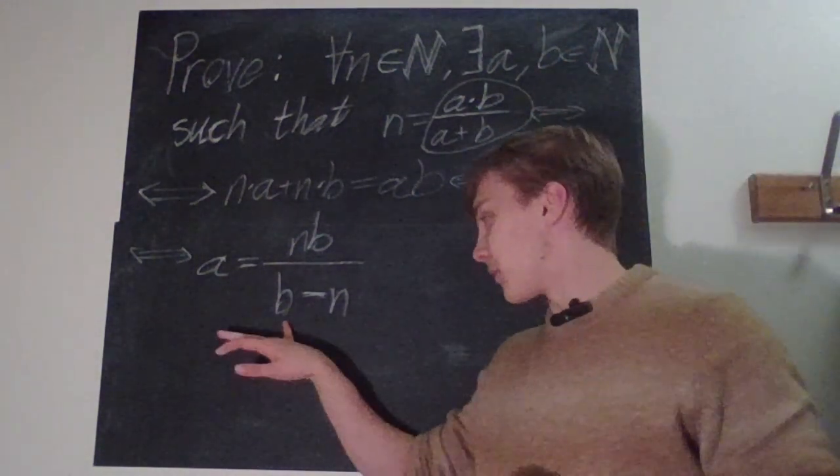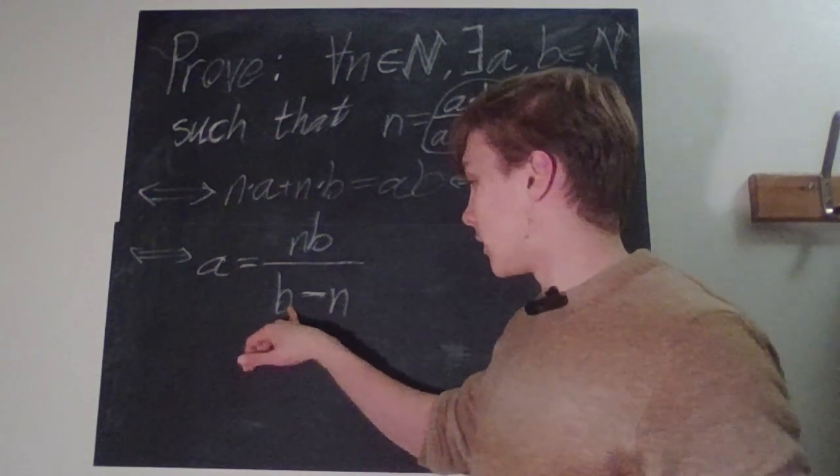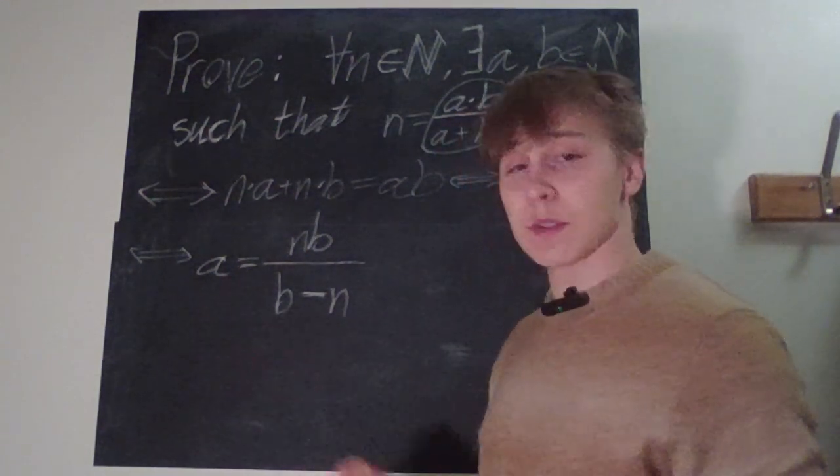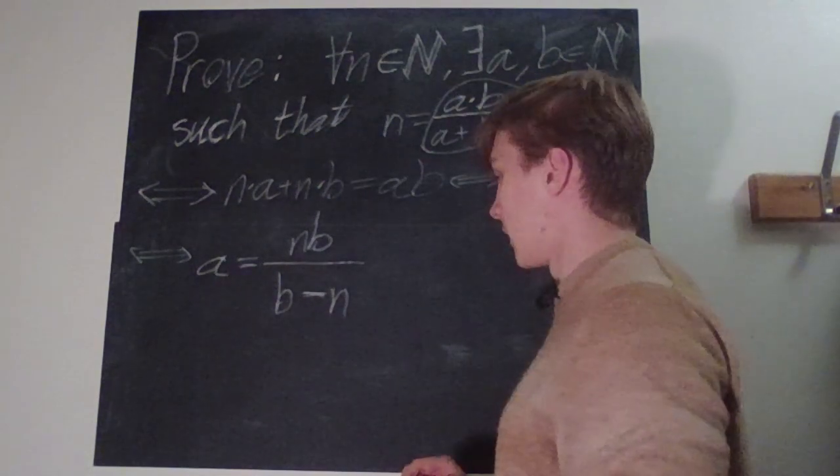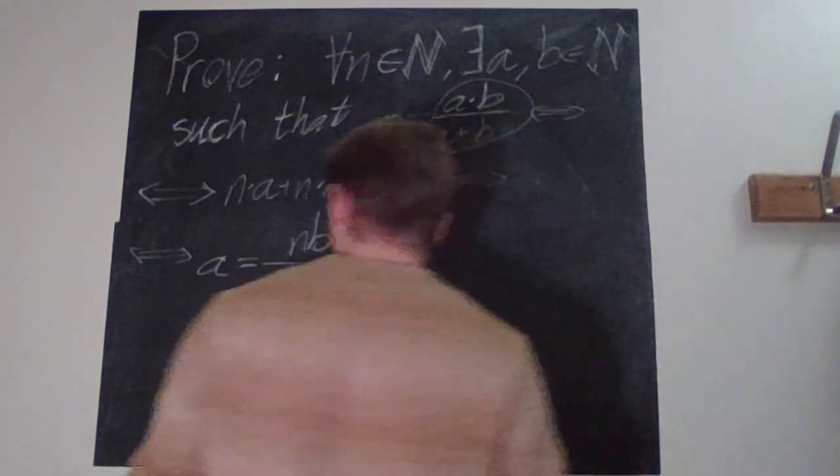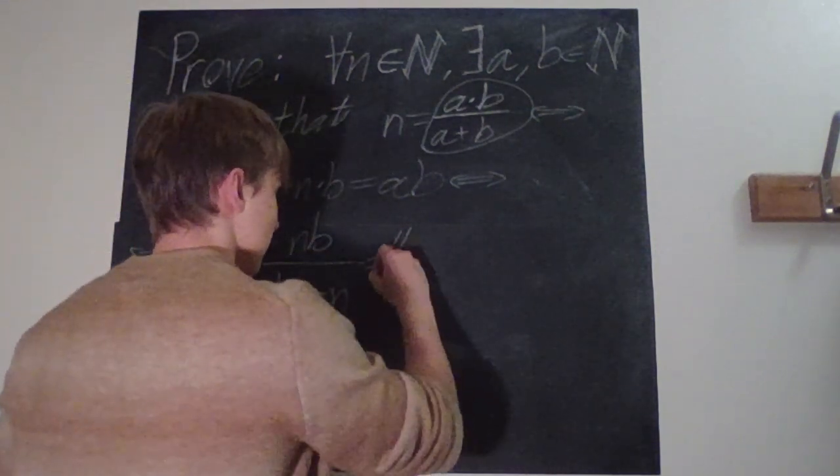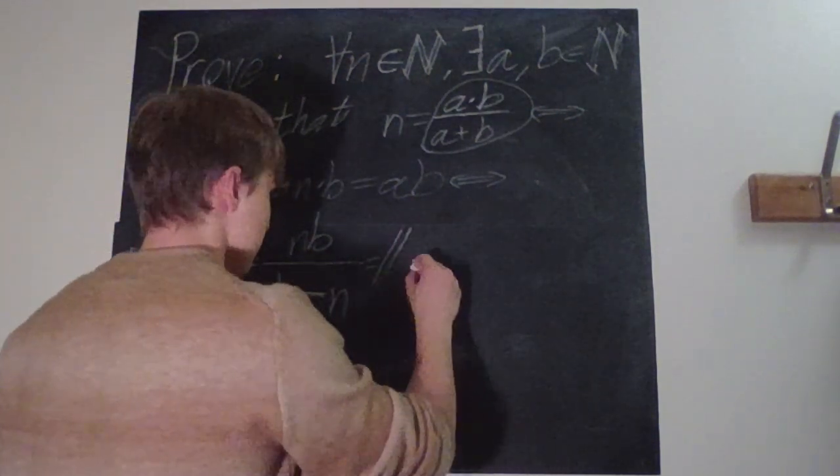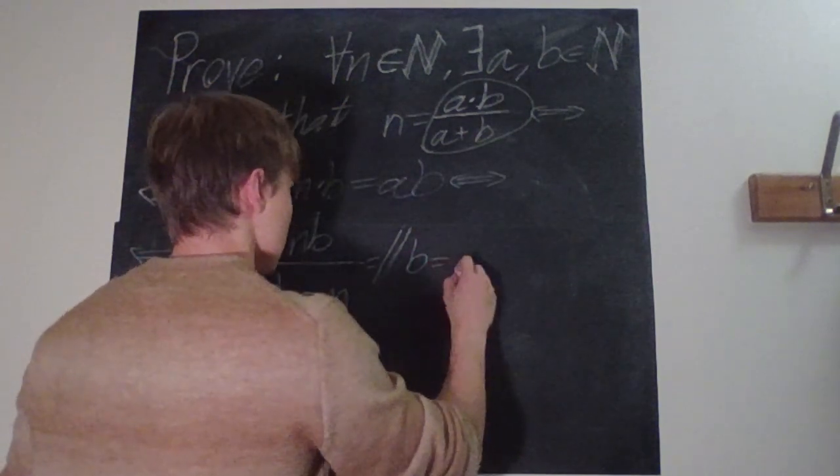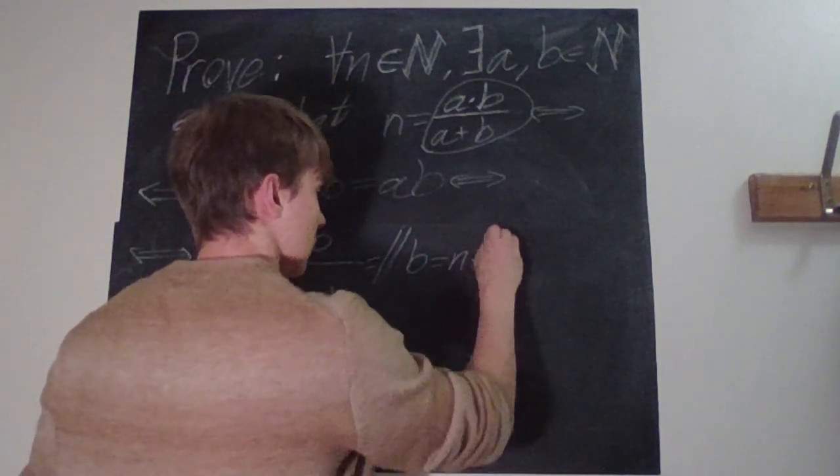So how should we choose b to make this disappear? Well, when it's equal to one then it doesn't matter. So let's just choose, have a quick notation here, we just let b be equal to n plus one.